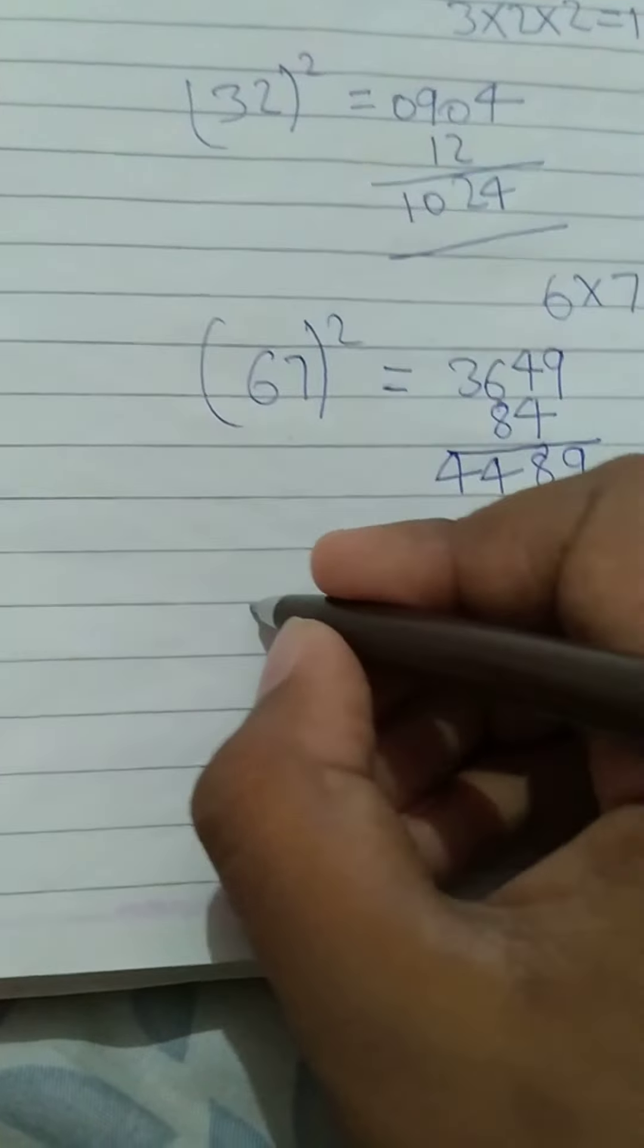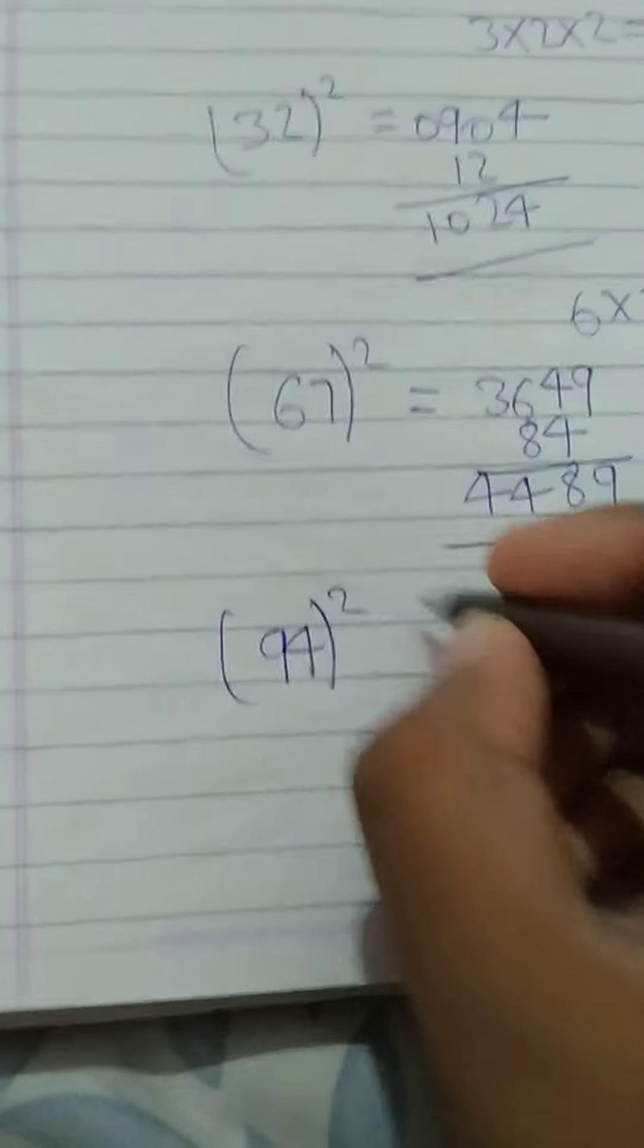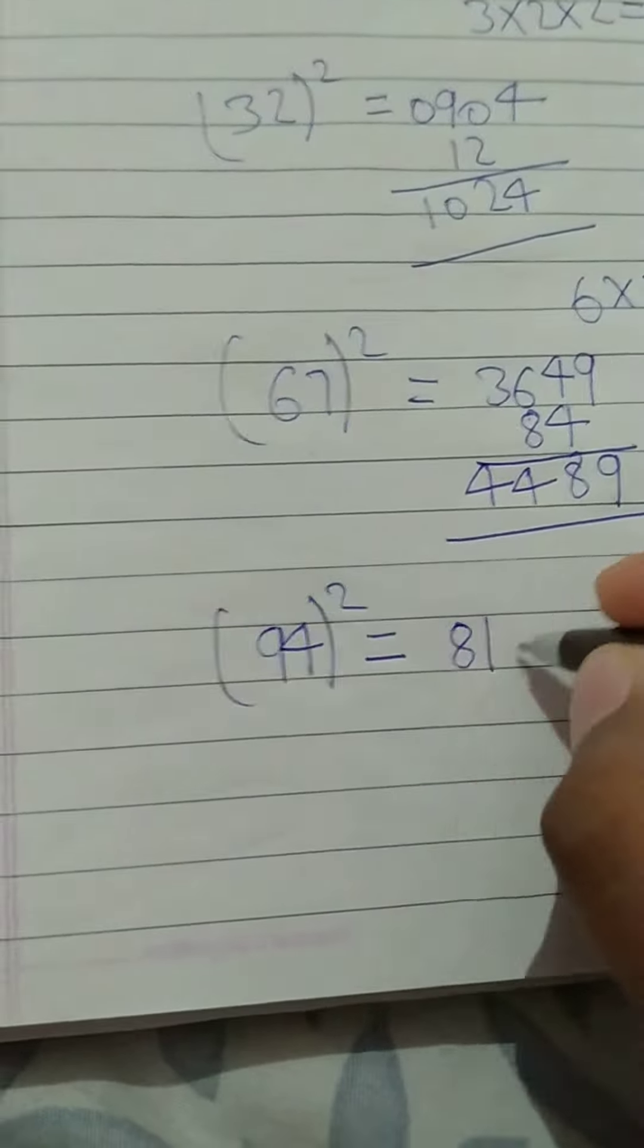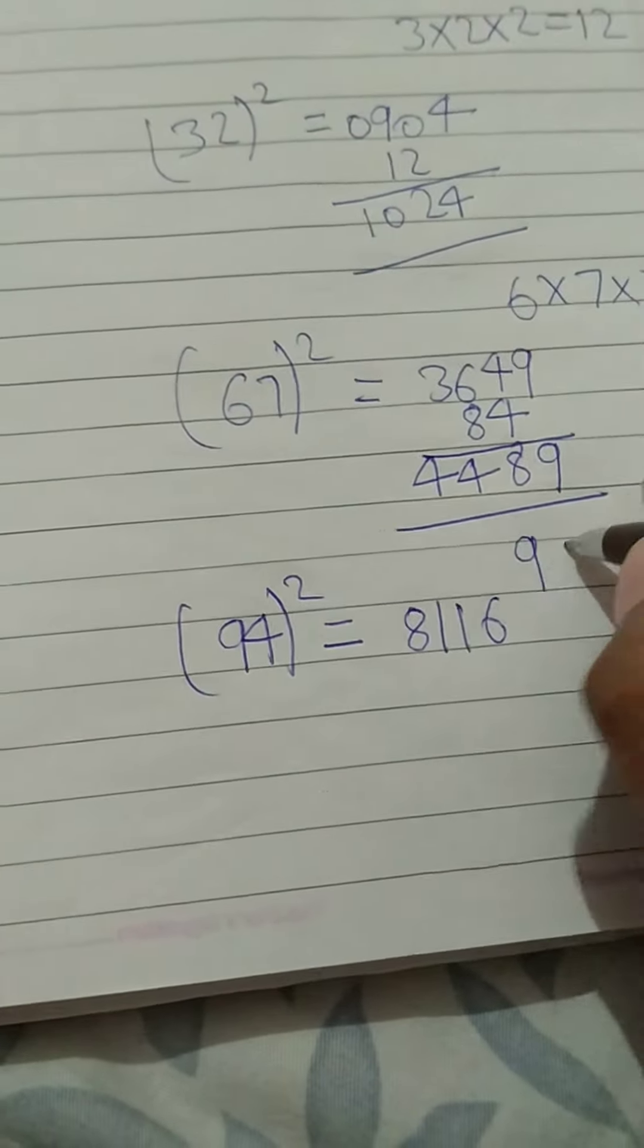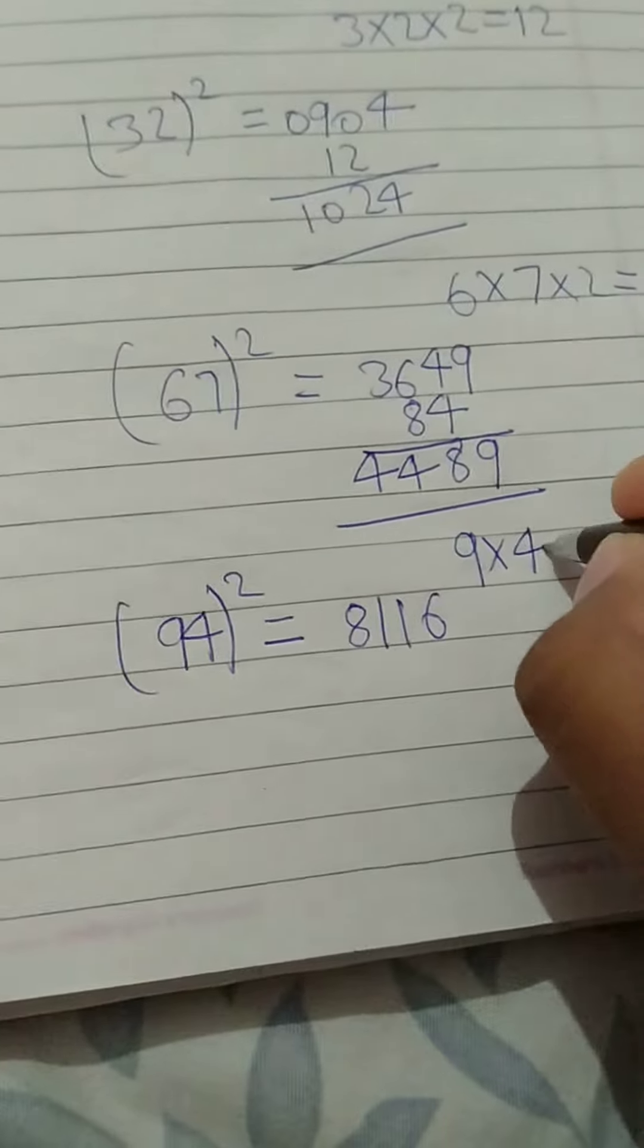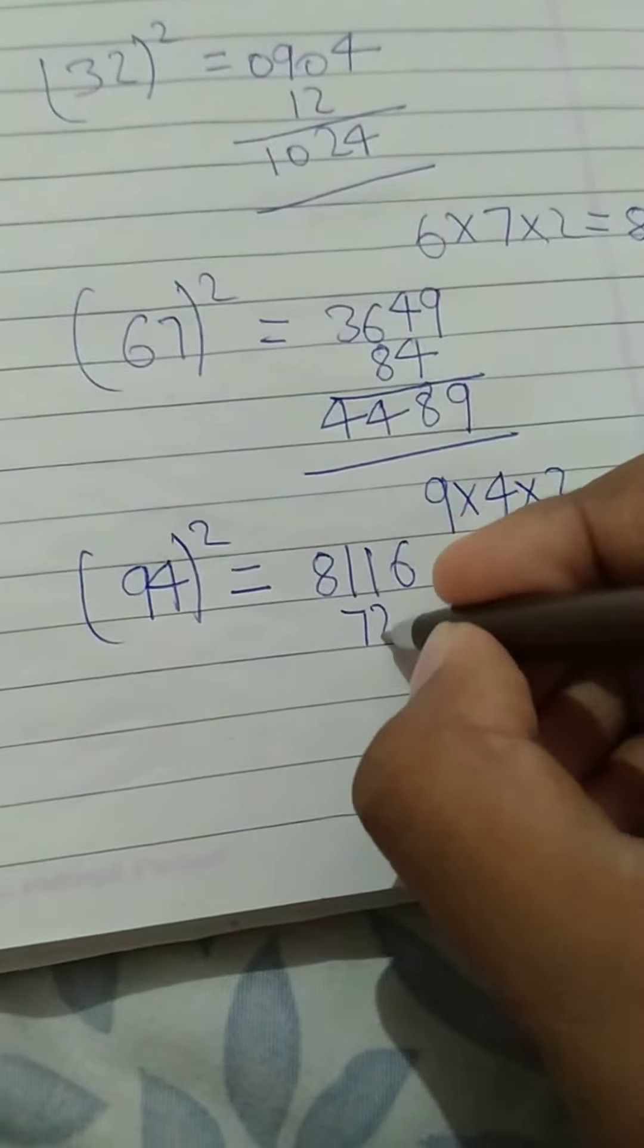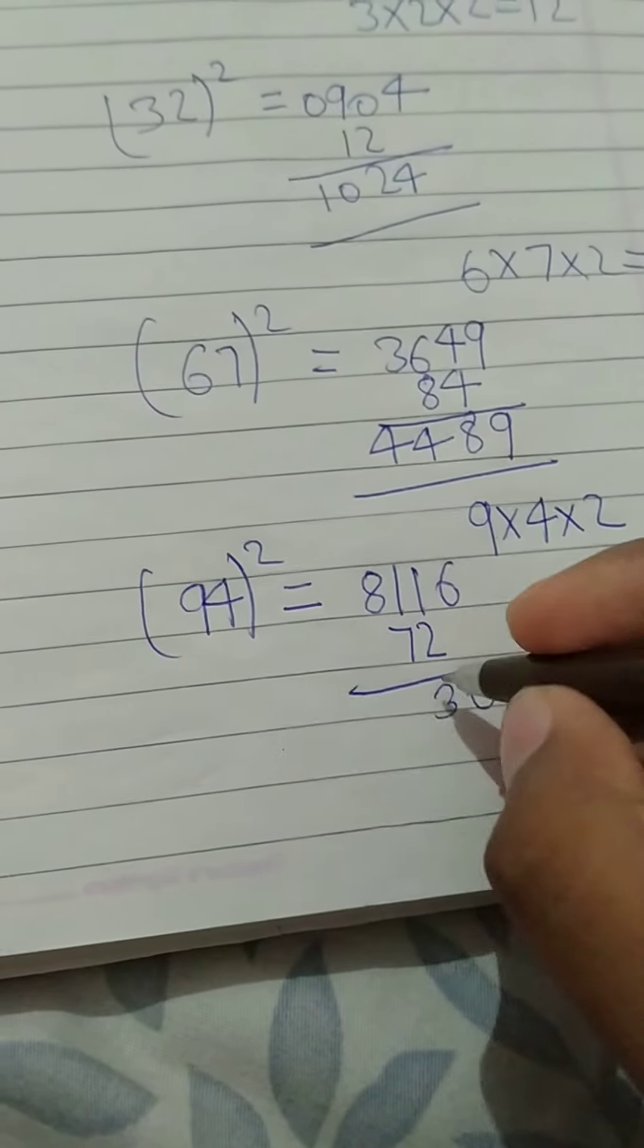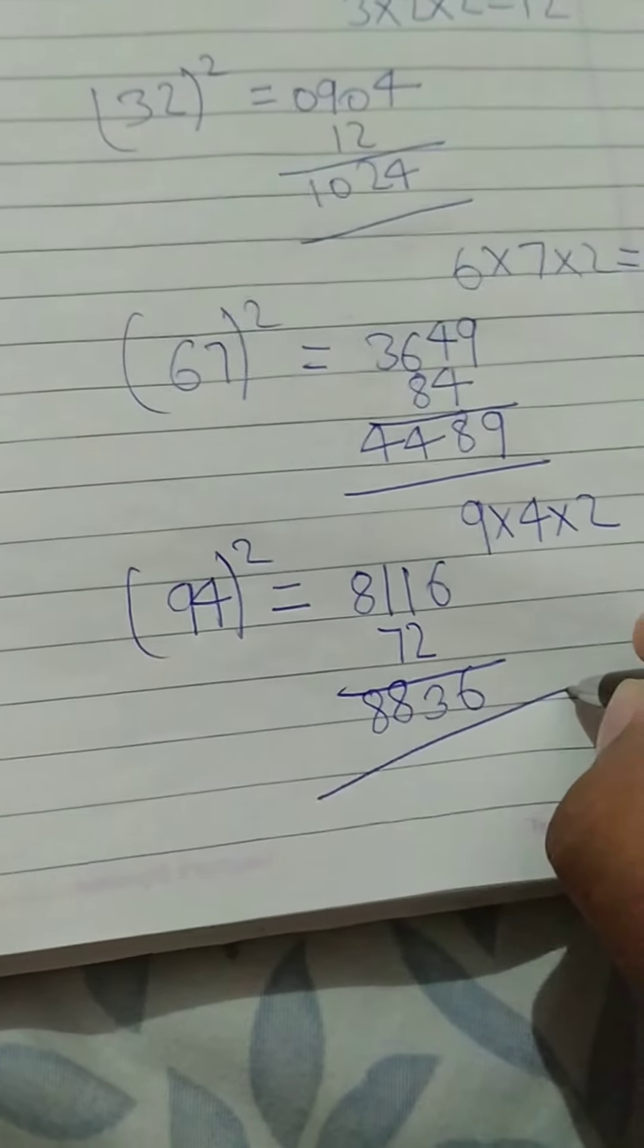Take another example. 94. 9 squared, 81. Square of 4, 16. Multiply 9 into 4, into 2. 72. 6. This is our answer.